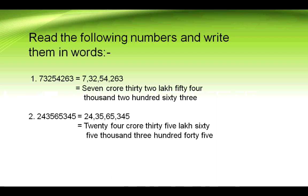Let's do some questions. Read the following numbers and write them in words. First number: 7,32,54,263 — we can read this as seven crore thirty-two lakh fifty-four thousand two hundred sixty-three. Second number: 24,35,65,345 — we can read this as twenty-four crore thirty-five lakh sixty-five thousand three hundred forty-five.